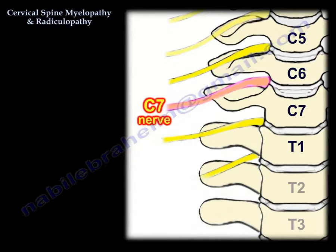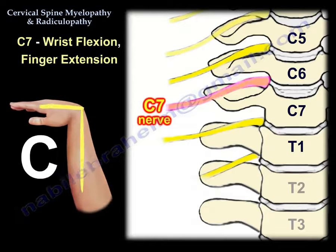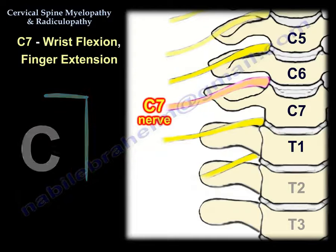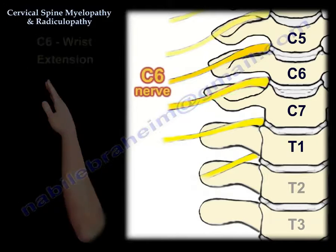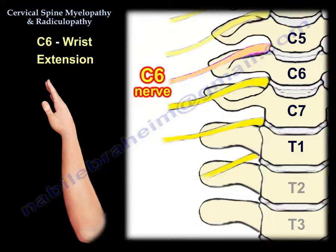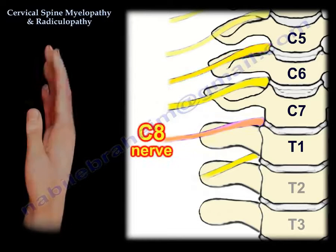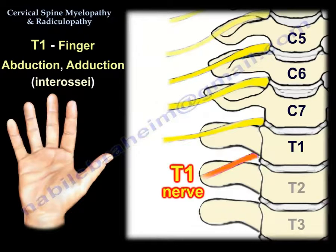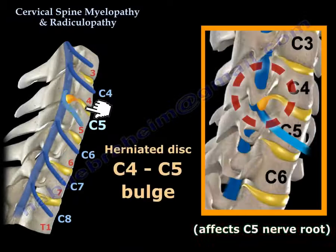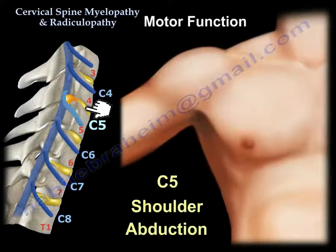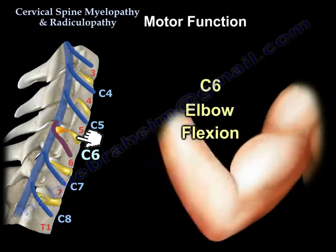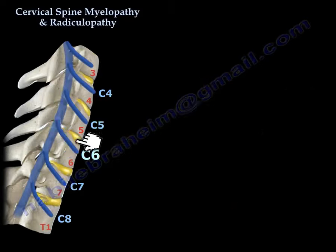For C7, you will have wrist flexion — the wrist is flexed and the finger is extended, resembling the shape of seven, which helps you remember it. If wrist flexion is C7, then wrist extension is C6. Finger flexion is C8. Finger abduction and the interossei are T1. Shoulder abduction is C5. Elbow flexion is C6, and elbow extension is C7.